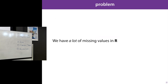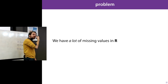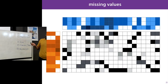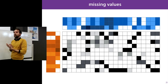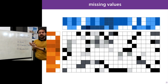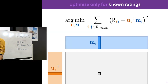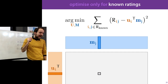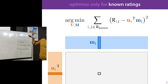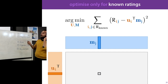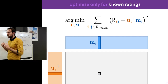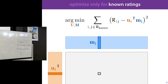One issue is that we have many missing values — most of the matrix is empty. When we set missing values to zero, those aren't true zero ratings, they're unknown. So in practice it's often more accurate to sum over only those elements for which we actually know the rating, rather than the whole matrix. This tends to lead to more accurate results.